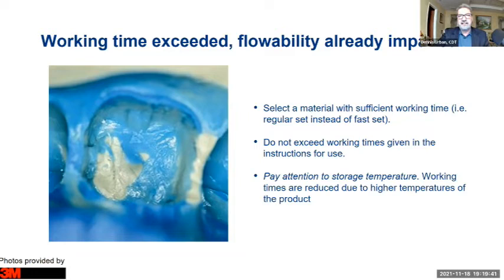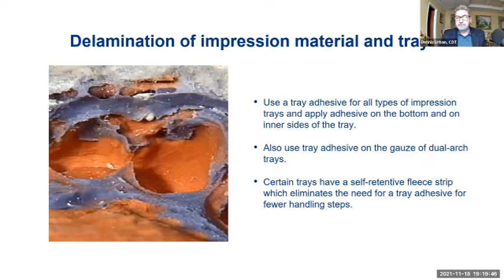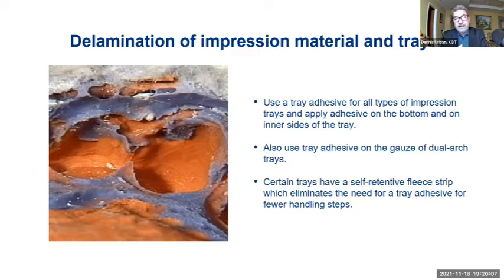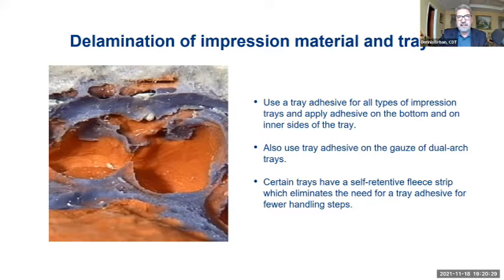Delamination of impression materials in the tray is another cause of distortion. Use a good tray adhesive — if you're using polyvinyl, use a good polyvinyl tray adhesive. Apply it on the bottom and the insides and inner parts of the tray. Sometimes impression material lifts away from the tray when adhesive is applied inconsistently — some areas have adhesive and others don't. You can also use gauze on dual wash trays with adhesive on the gauze. Certain trays have a self-retentive fleece strip, but I still recommend some tray adhesive because it helps hold that impression material in place.